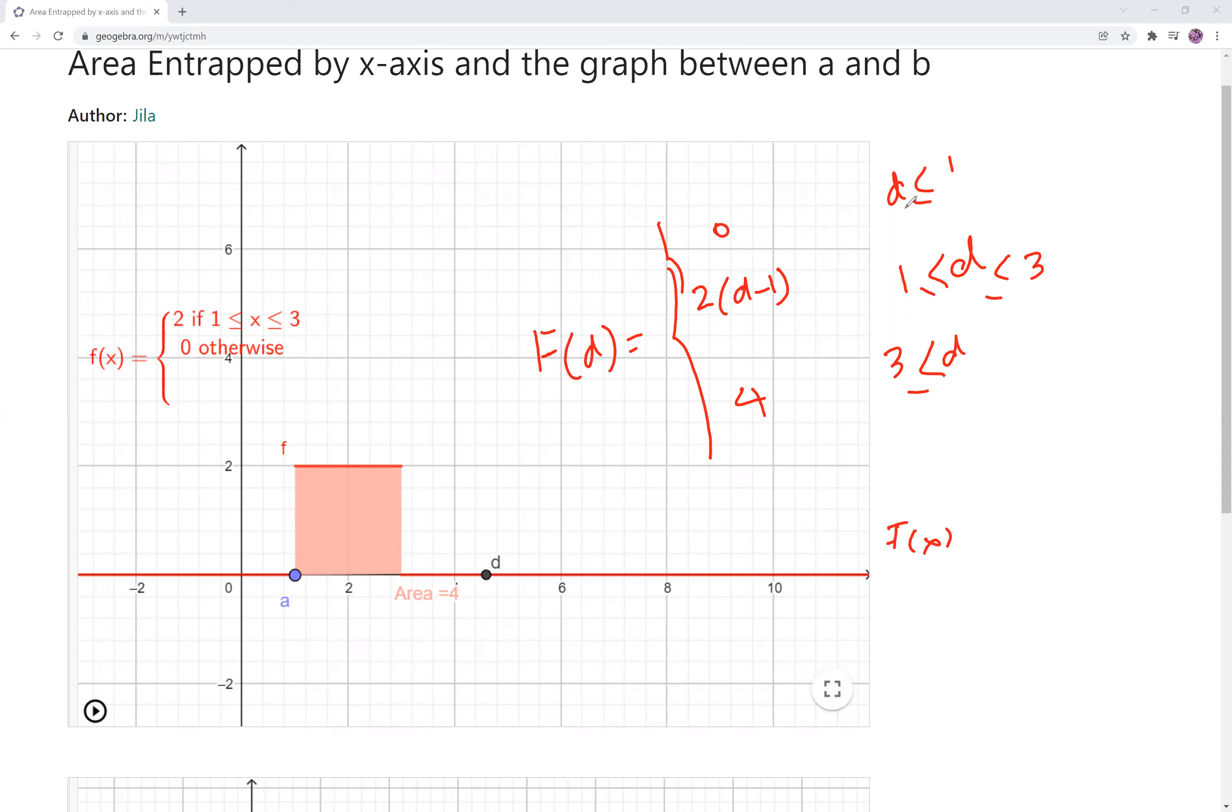And if I write F of X, I replace D by X everywhere. So 0 if X is less than or equal to 1, it's 2 times X minus 1 if X is between 1 and 3, and is equal to 4 if X is bigger than or equal to 3.